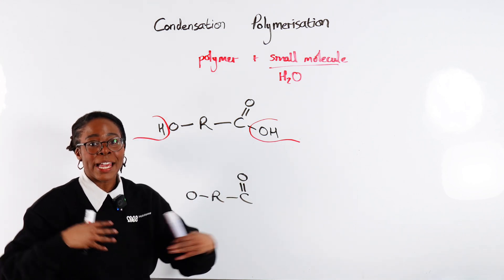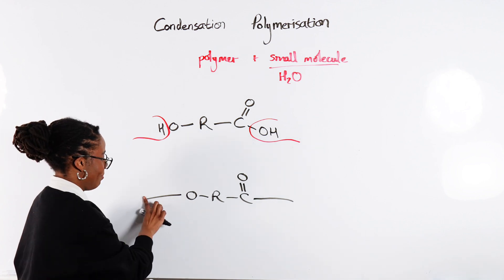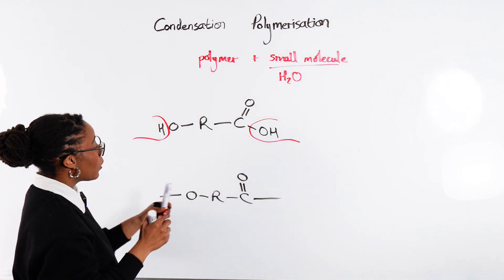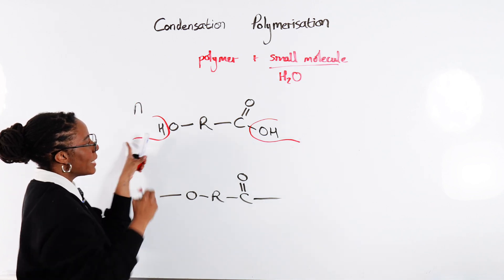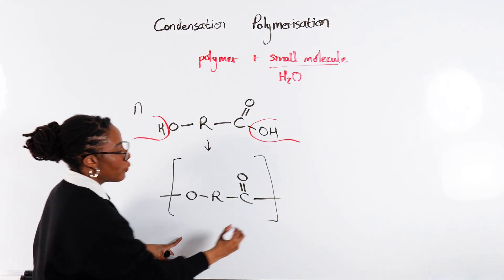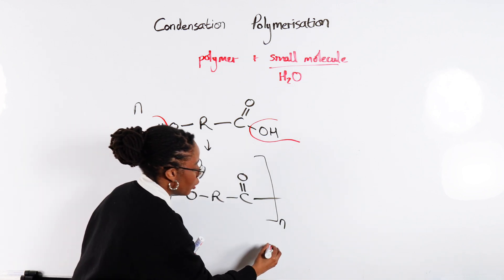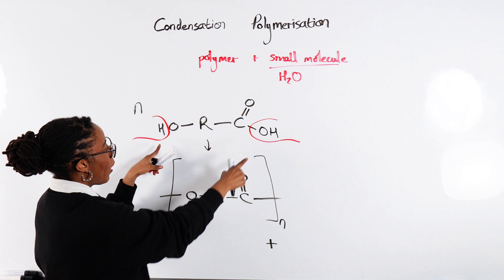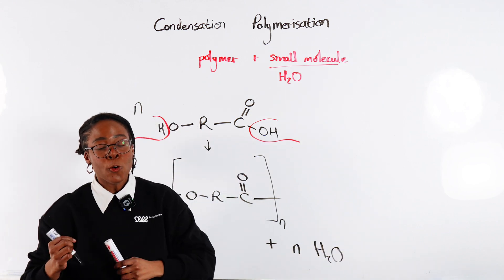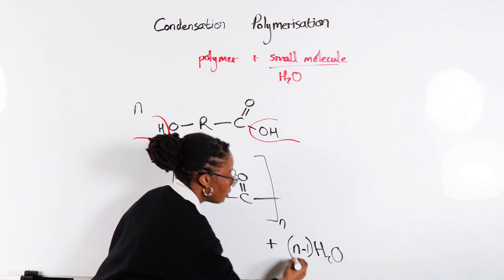Our repeating unit would look like this, and to show that this is a long repeating chain we would need our trailing bonds showing these are connecting to the next one and the next one. If we wanted to turn this into an equation, we would say we need n of our monomer, and that's going to produce a polymer of chain length n. We're also losing water molecules — we've got an H and an OH, so that's n H₂O, but just like before, to consider the end of the polymer it's going to be n minus 1.